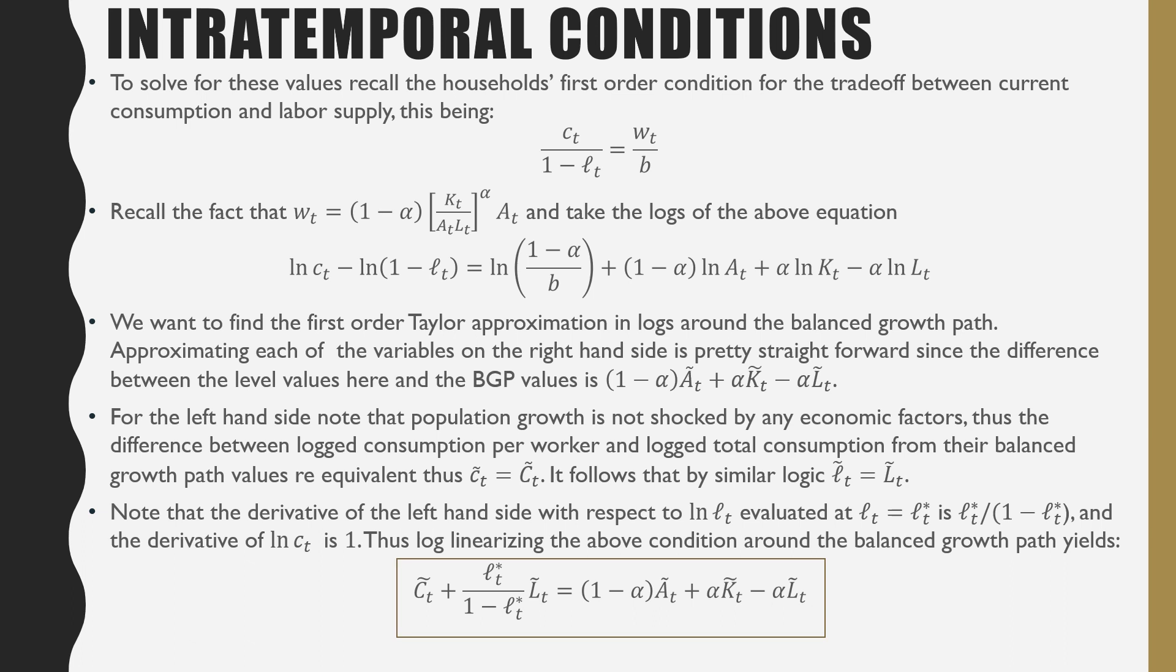For the difference on the left-hand side, note that population is not shocked by any economic factors. Plus, the difference between the log consumption per worker and the total log consumption from their balanced growth path is equivalent. Thus, Ct tilde is equal to Ct tilde.